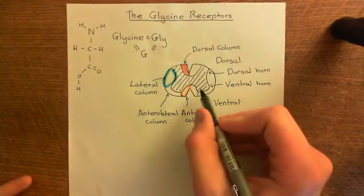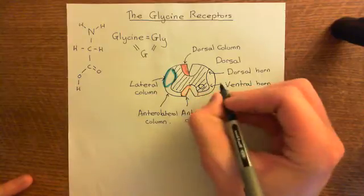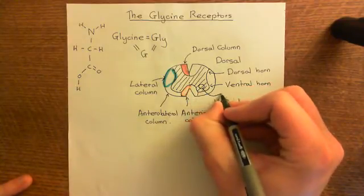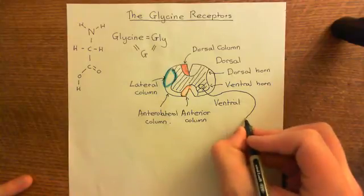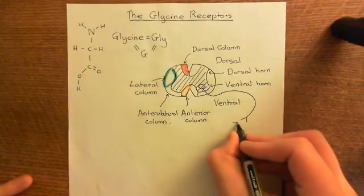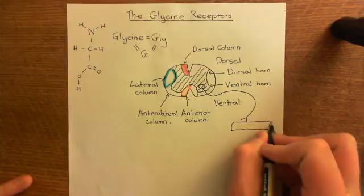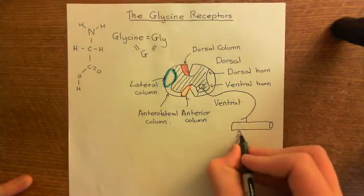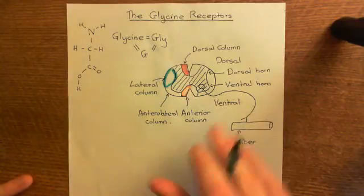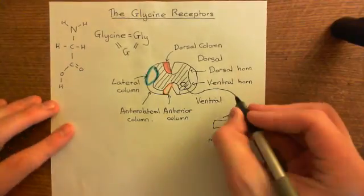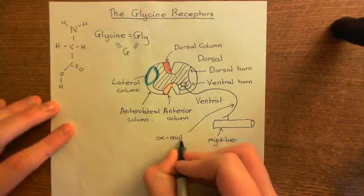In the ventral horn of the spinal cord are the cell bodies of motor neurons. So let's draw a motor neuron here — this is the cell body of a motor neuron. Then the axon of this motor neuron comes out and goes into a mixed spinal nerve, and it will eventually synapse onto some skeletal myofibre. So out of the ventral horn come the neurons which synapse onto skeletal muscle cells. This is an alpha motor neuron.